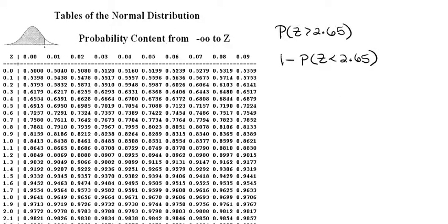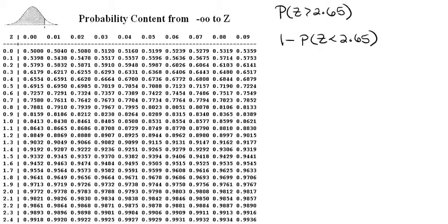Now to find the 2.65 on this table we're going to scroll down. This number 2.65 has to be broken down into two parts. This is 2.6 plus 0.05.